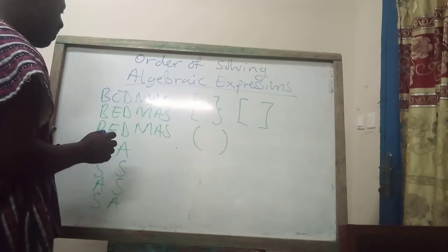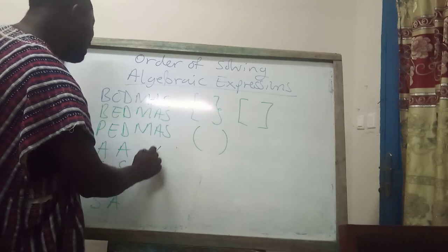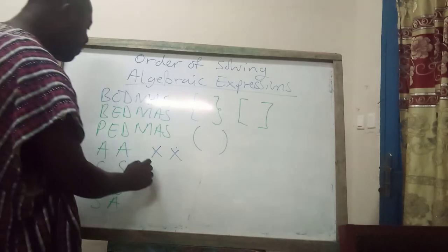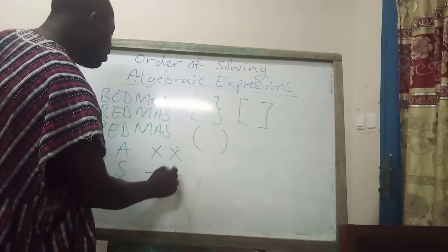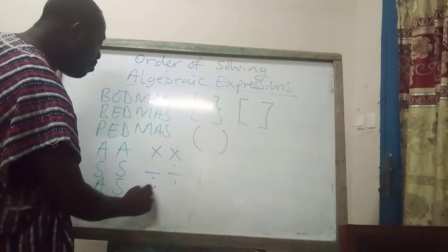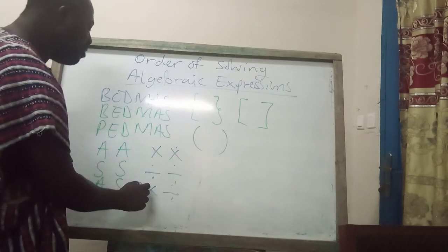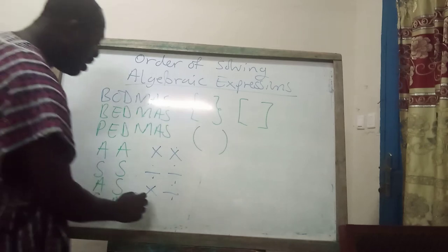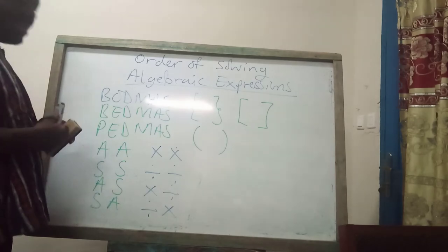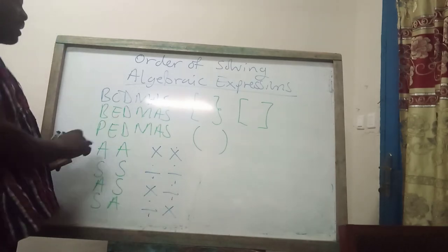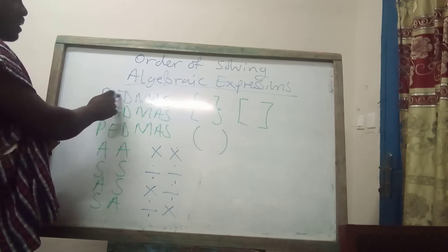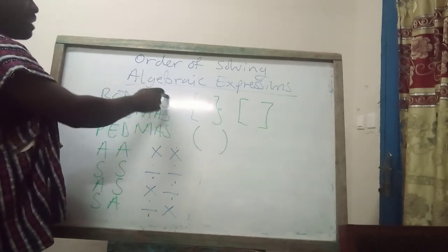In the same manner, if it is left with only multiplication and multiplication, do it from left to right. If it involves multiplication and division, the one which comes first from left to right is worked first. But when they are all together, make sure you work what is inside the bracket first, then remove the bracket, then come to division, multiplication, addition, and subtraction.